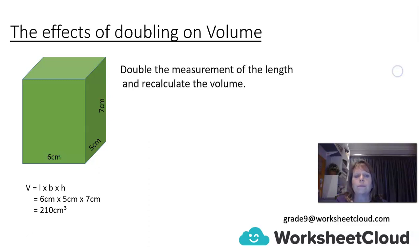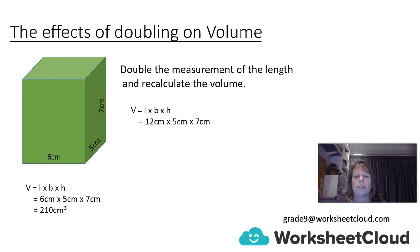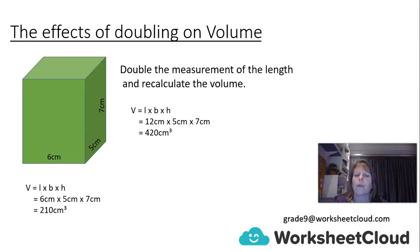Now let's double the length. The 6 cm is going to be doubled, but we're going to keep the breadth and the height the same. So it's 12 cm times 5 cm times 7 cm, and we get 420 cm cubed. If at any stage you think I'm pulling a fast one, please use your calculator and double check my working.